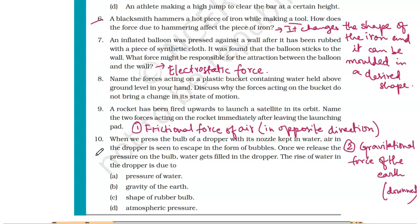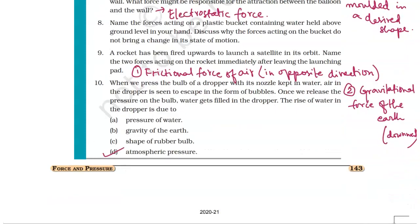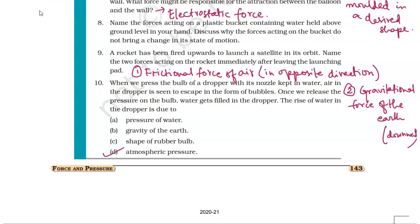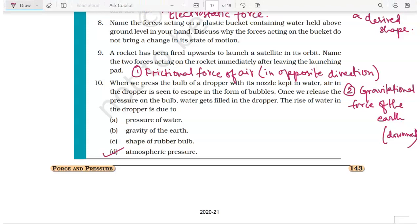Question number ten: when we press the bulb of a dropper with its nozzle in water, air escapes as bubbles. When we release the pressure, water gets filled in the dropper. The rise of water in the dropper is due to atmospheric pressure. If you need further help, please mention it in the comment section.